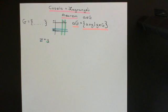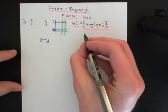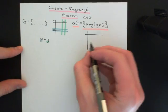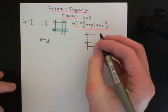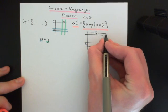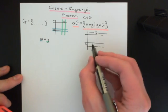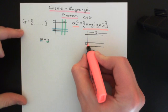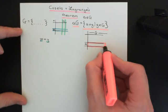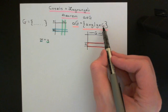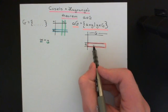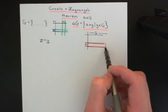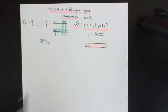That set — written as little a followed by capital G — in terms of the composition table means you go through all the elements of capital G, all of which have a column dedicated to them, and left-multiply them by little a, giving you all of the answers in the row corresponding to little a. So this set is just a fancy way of saying all of the elements in the row corresponding to little a.